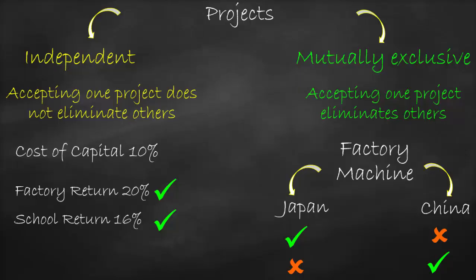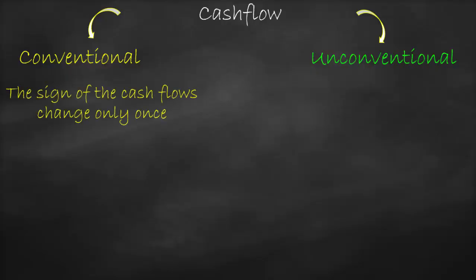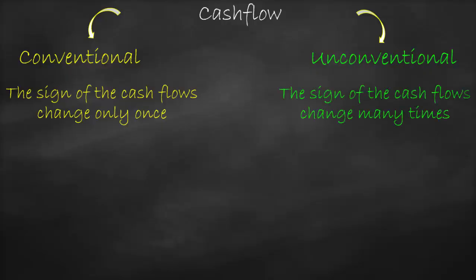When we talk about cash flows, we have two types: conventional or unconventional. Conventional cash flow is the normal pattern — at the beginning of the project you pay for investment, machines, equipment, and raw materials, so it's a cash outflow. Then for the rest of the years it's positive cash inflow. The sign of the cash flow changes only once: negative at the start, then positive.